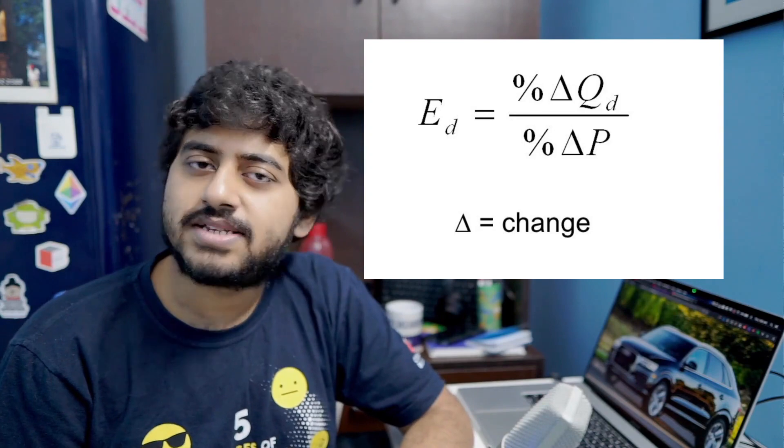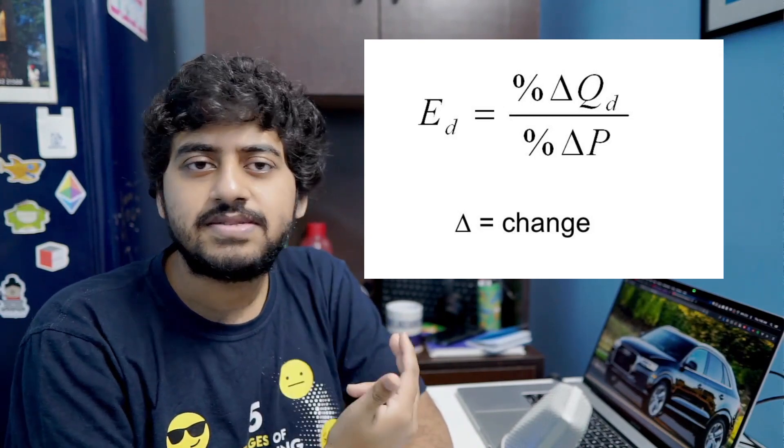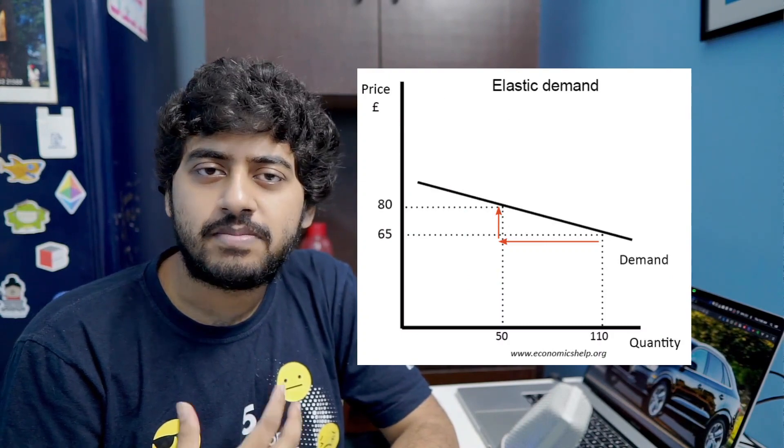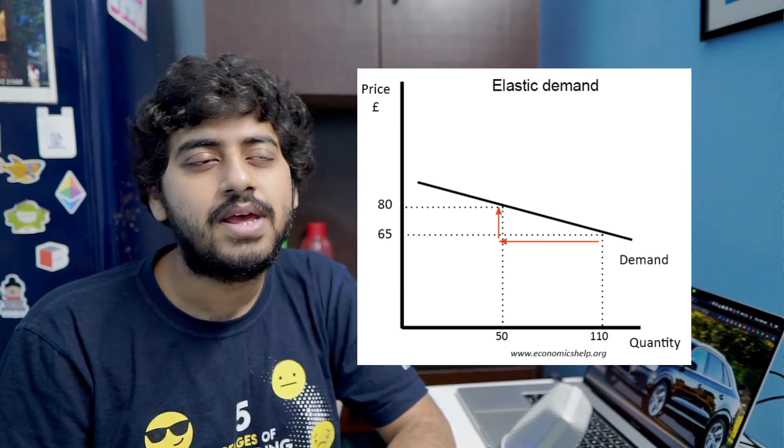For most goods, the elasticity is negative. If you have a positive change in price — say the price increases by 10% — then the quantity sold will reduce. If it reduces by 10% itself, you have an elasticity of minus 1. But there are some goods which interestingly have a positive elasticity, meaning if you increase their price, more is sold. Goods like these don't follow the law of demand and are not called ordinary goods — you find them at two very extreme ends of the spectrum: goods considered really inferior, or goods considered really superior and luxury.